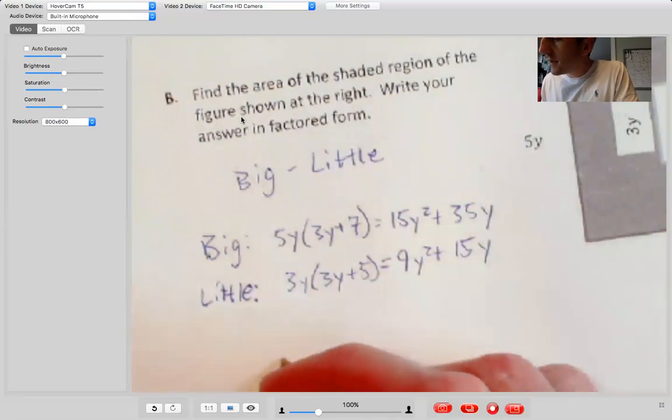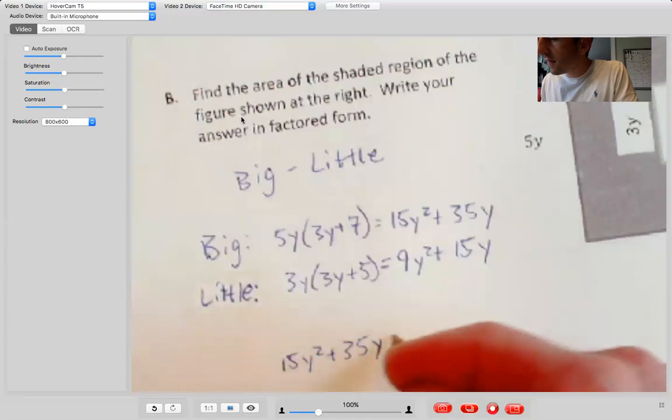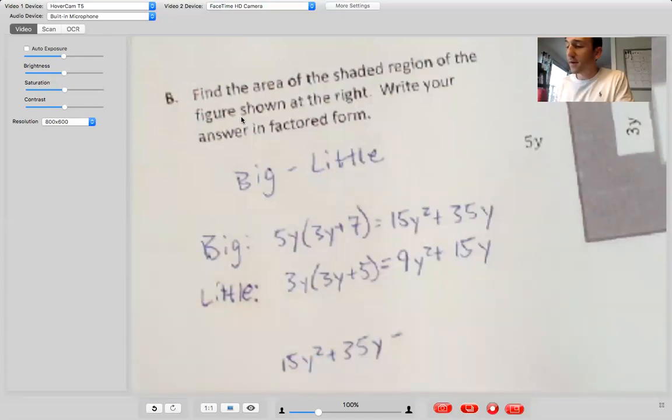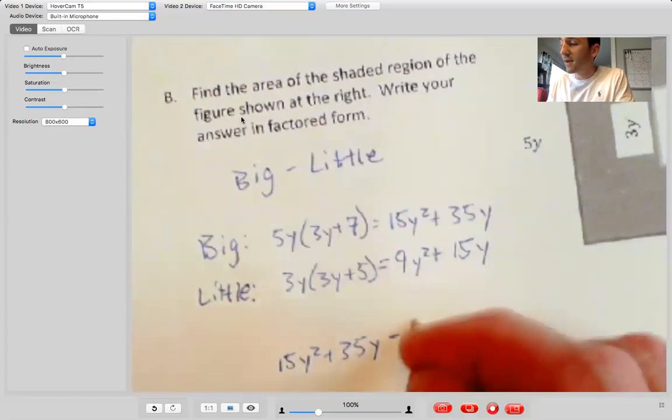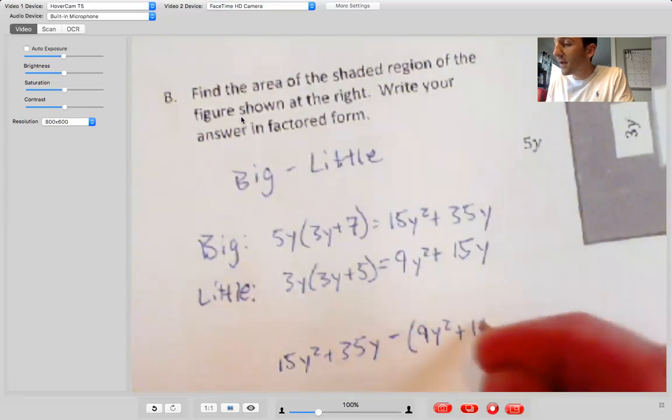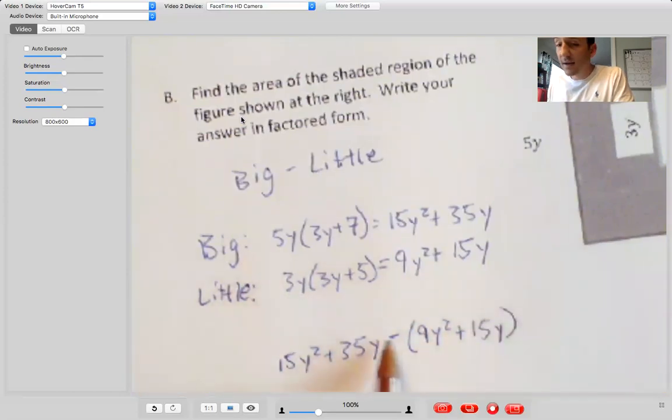Okay. So now I do big. And then hopefully you remember this from eight one. If we subtract two terms, then we have got to put those in parentheses. If not, then we're going to do it wrong because again, there we think we distribute the negative. So that's actually a minus nine Y squared. That's actually a minus 15 Y. So 15 Y squared minus nine Y squared. Those are like terms. So I add their coefficients. 15 plus negative nine is six.